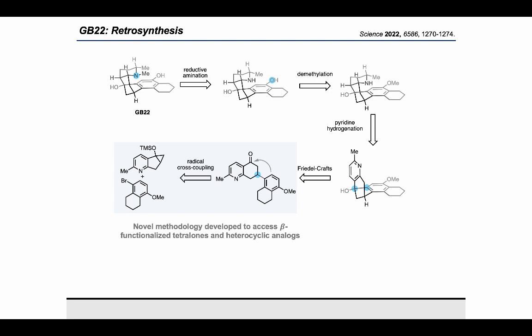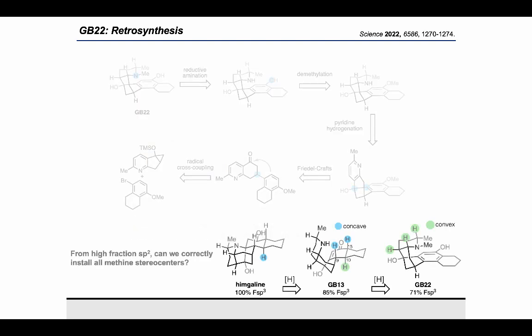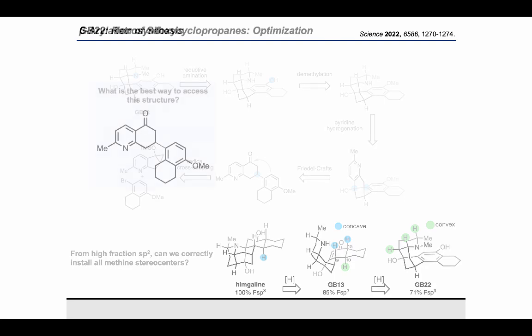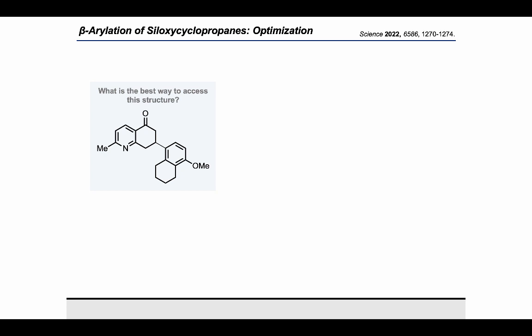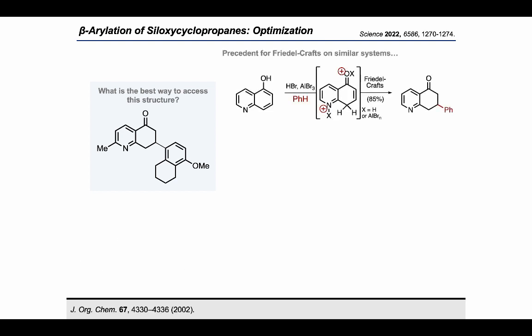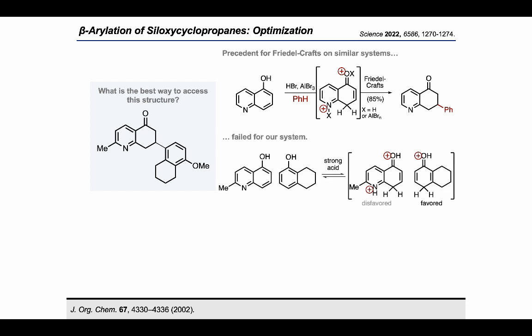There are two main focal points of the synthetic analysis. First, we would need to develop a strategy to access this beta-substituted ketone, which cannot be accessed via typical Michael addition strategies. Second, this strategy takes us from high-fraction sp2 carbons to high-fraction sp3. While this would be easier for GB-22—as all of the installed hydrogens would prefer attack from the convex face—this strategy would be trickier to employ on GB-13 and hymgaline, where multiple hydrogens would have to be installed on the concave face. Nevertheless, the strategy would greatly reduce the synthetic burden. Unfortunately, the enone required for a Michael addition would prefer the aromatic tautomer, which rules out that strategy.